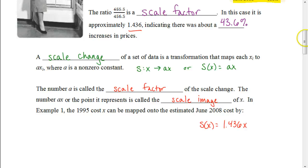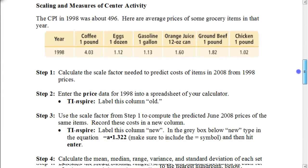That's what we're going to be doing in this next activity. Why don't you guys get out your TI Inspires, and we're going to use those to follow along in this activity. Here they give us some different items, some grocery items, and their prices in the year 1998. And we know that the CPI in 1998, they give that to us right here, is about 496.